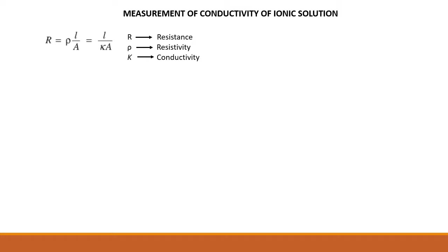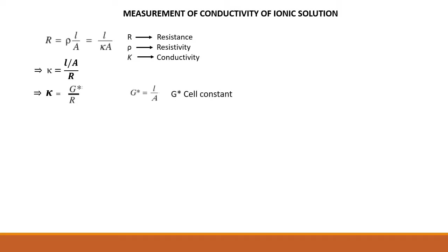Rho is resistivity. And kappa is conductivity or charge transport. We can write kappa equal to L divided by A, divided by R. And L by A is what we call cell constant z-star. So kappa equals z-star divided by R.